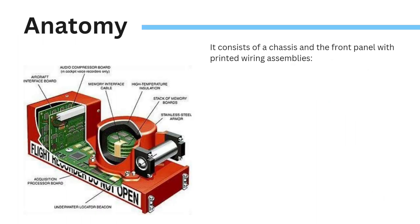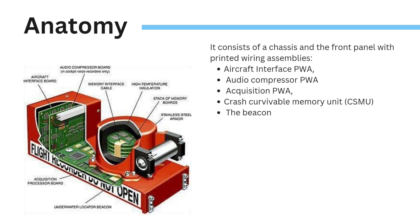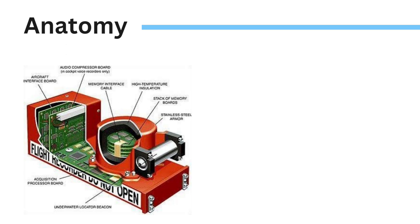Now let us discuss the anatomy of a CVR. It consists of a chassis and a front panel with printed wiring assemblies: an aircraft interface printed wiring assembly, an audio compressor printed wiring assembly, and an acquisition printed wiring assembly with the crash survivable memory unit and the beacon.